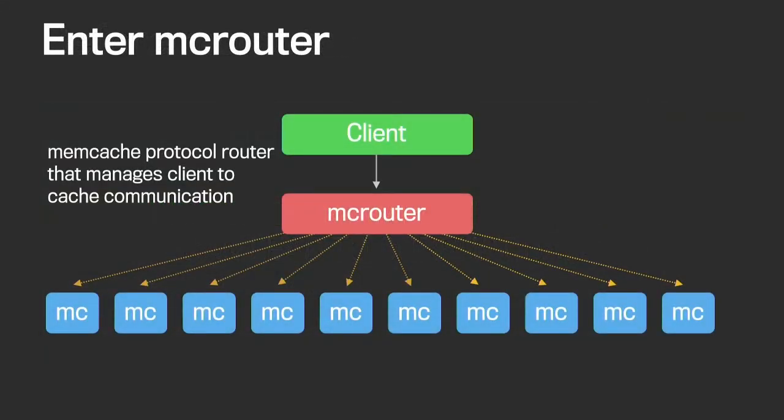Enter MacRouter. MacRouter is a memcache protocol router that manages client-to-cache communication. It sits between the client and the cache, acts as a proxy, and does all the cache requests on the client's behalf. This way, the client can be really thin, and we can offload all the actual routing logic to MacRouter.